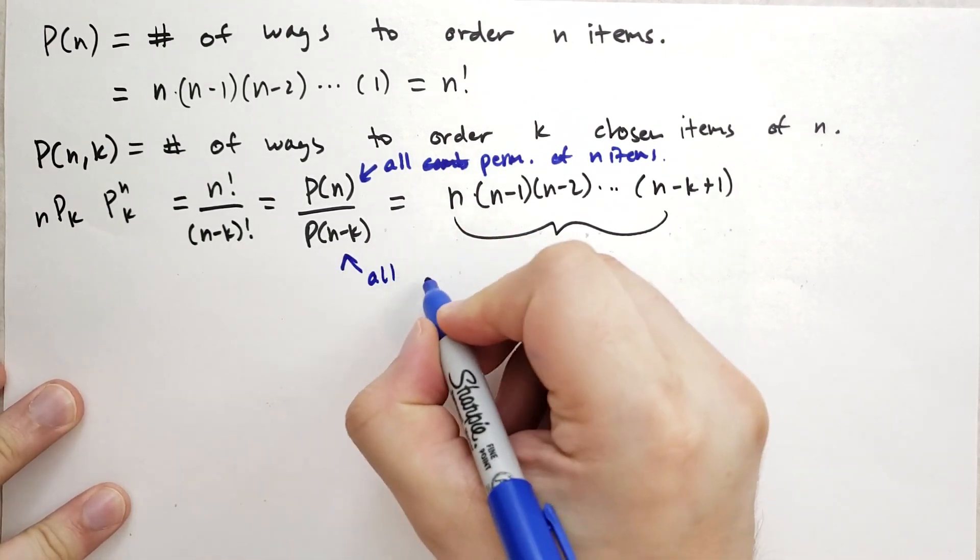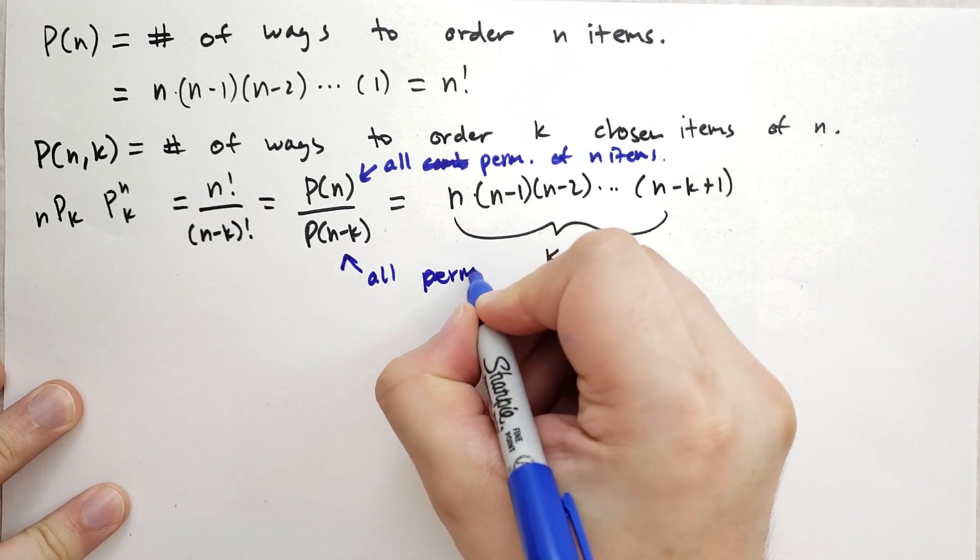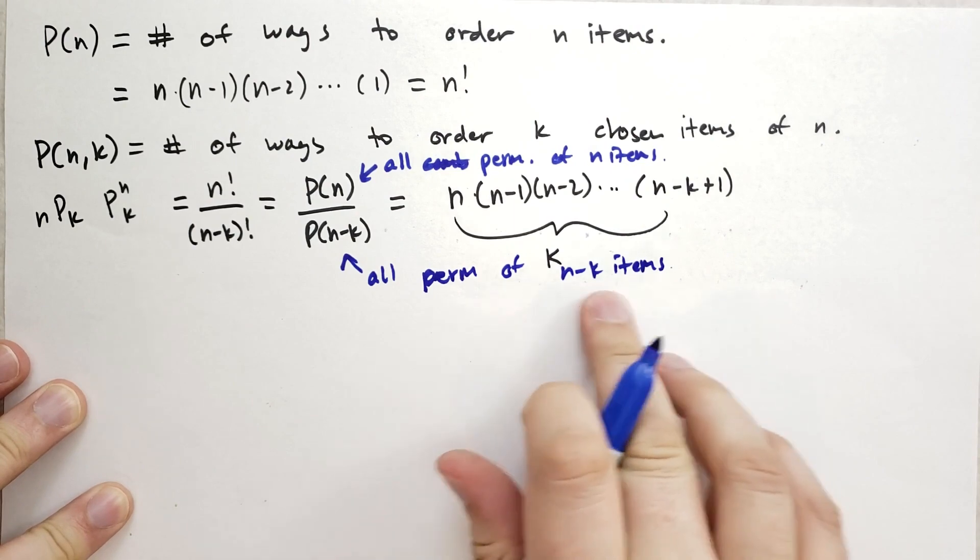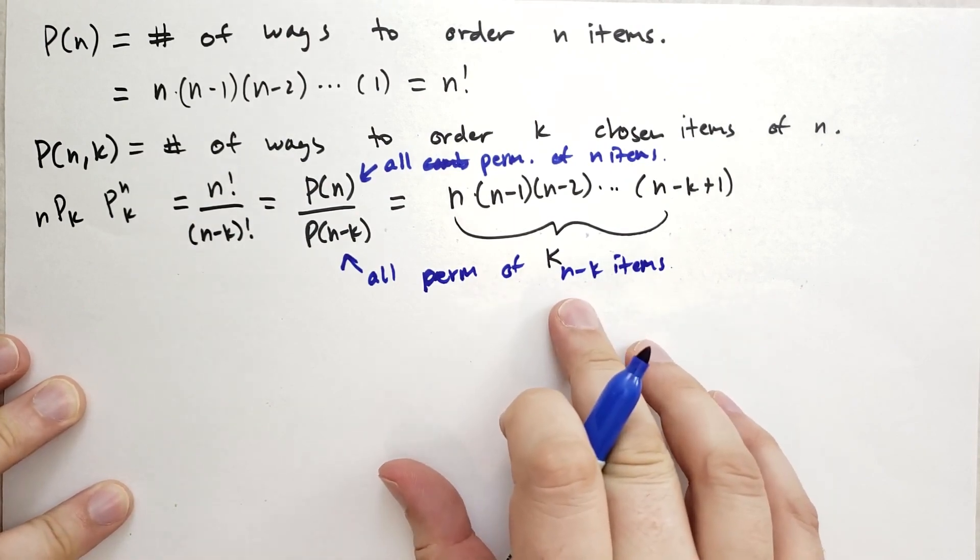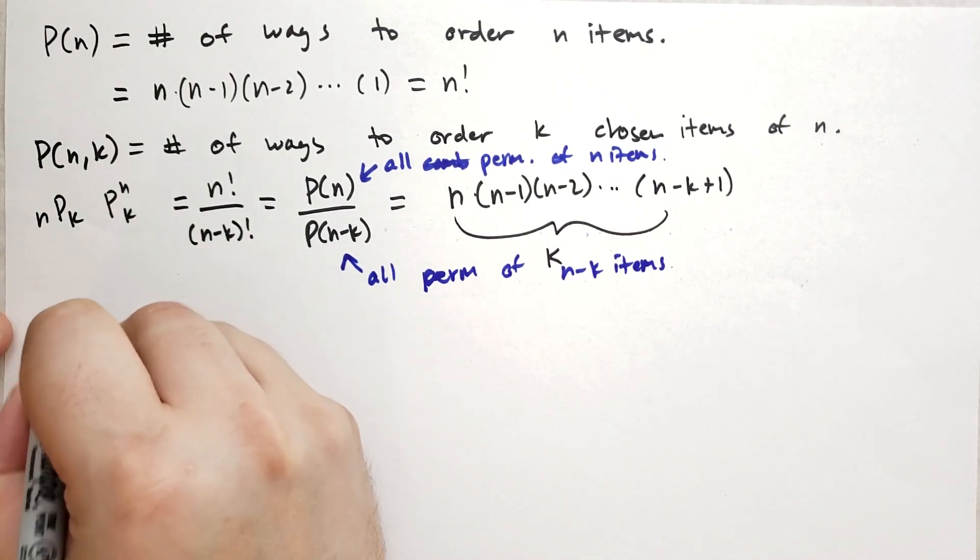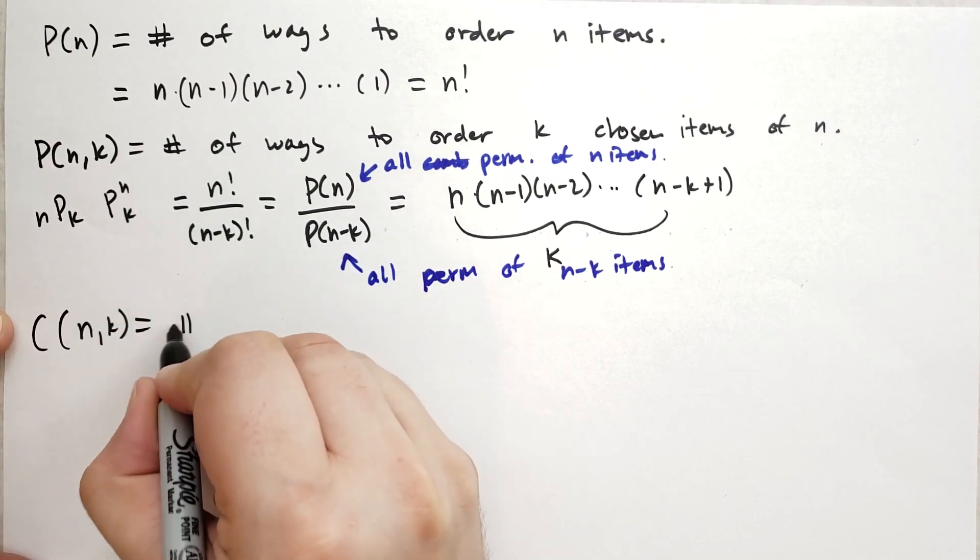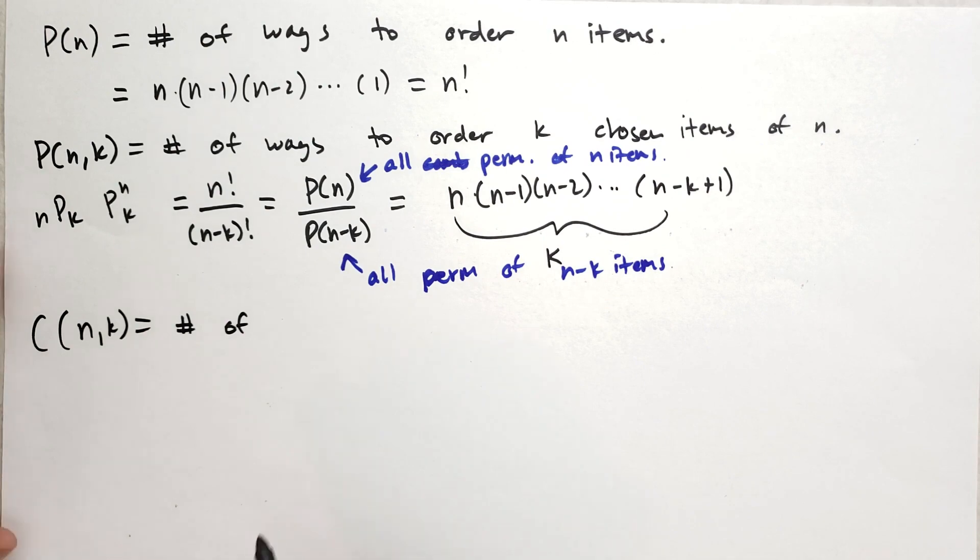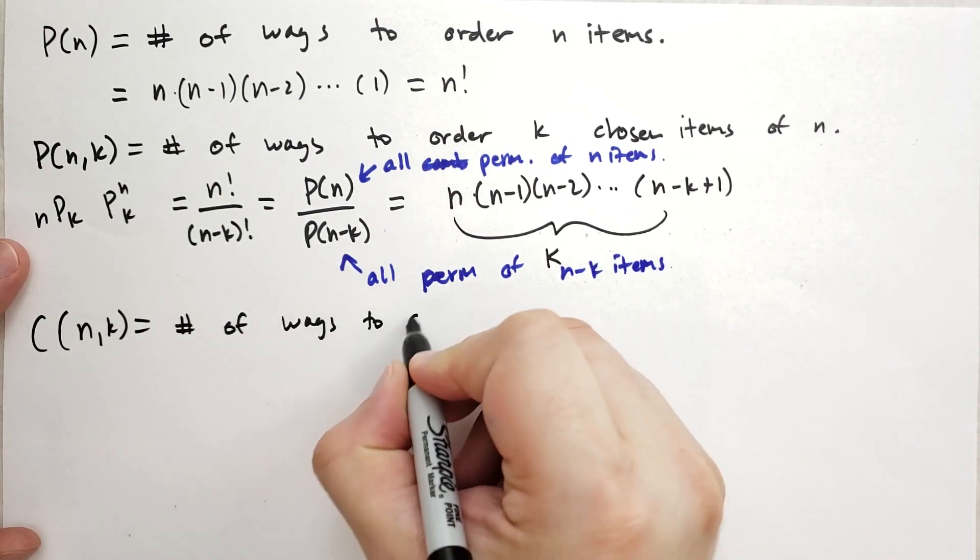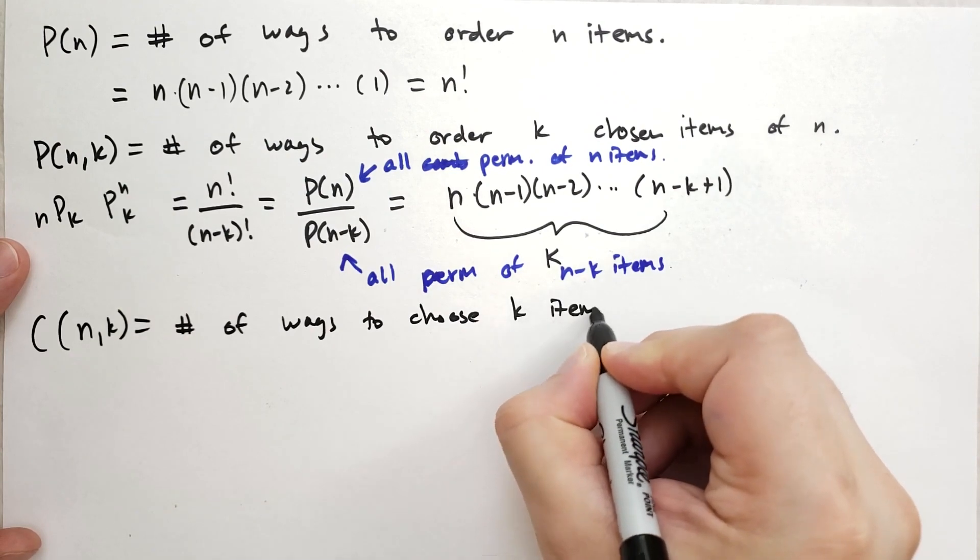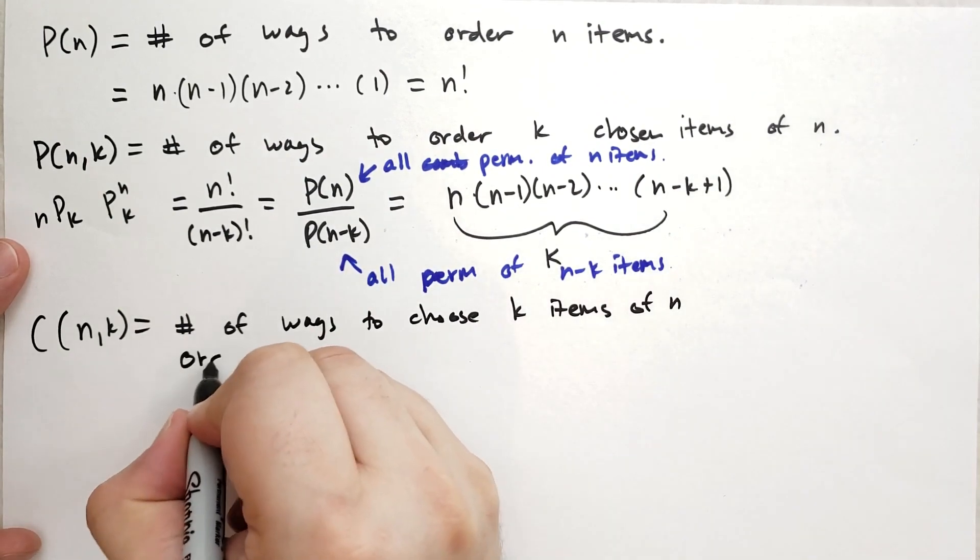And so really what this is, this is all the permutations of N minus K items, which you might think of as the remainder, the items that you're not going to pick. And so that's one way to look at this P and K. Now let's talk about C. C is the one that we've been dealing a lot with, and C is the number of, what's the right way to put this? Number of ways to choose K items of N where order is not important.